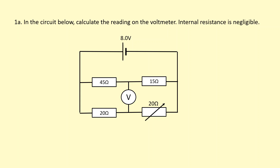In the circuit below, calculate the reading on the voltmeter. Internal resistance is negligible. I'm interested in the potential difference between point A and point B. Because the voltmeter has very high resistance, there should be no current flowing between A and B, and the voltmeter should not be affecting the circuit.